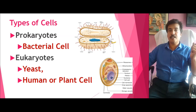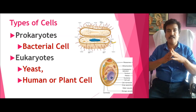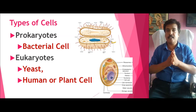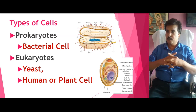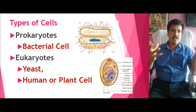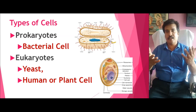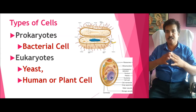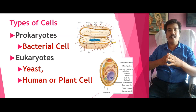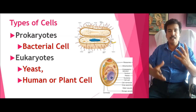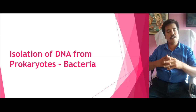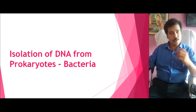Apart from bacteria, all cells in this universe are generally eukaryotic in nature, starting from yeast — a single-celled eukaryote — to multicellular organisms like humans. These are the two types of cells where DNA can be found, whether in prokaryotic bacterial cells or eukaryotic cells from yeast to humans. The isolation procedure of DNA from prokaryotes and eukaryotes will vary drastically.